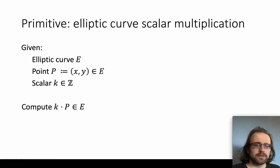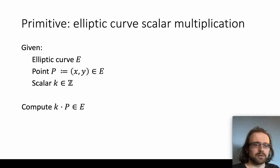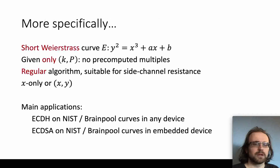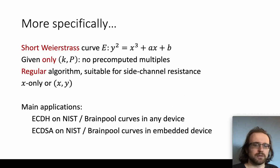The goal here is to speed up elliptic curve scalar multiplication. We're given an elliptic curve E, a point P on that curve, and a scalar k which is just an integer, and we wish to compute k times P — another point on the elliptic curve. More specifically, we'll be working with short Weierstrass curves, which are the most common and most general form of elliptic curve used in cryptography. We're given only k and P, so we don't have access to a pre-computed table of multiples of P. We're looking to produce a regular algorithm, which is better for side-channel resistance.